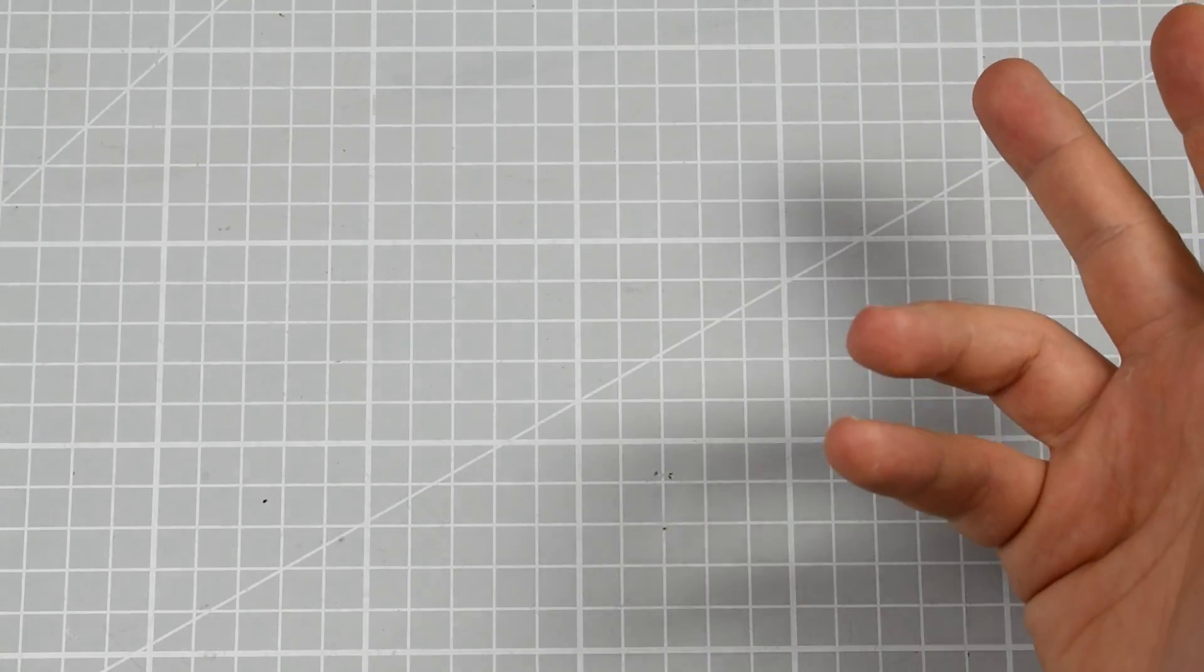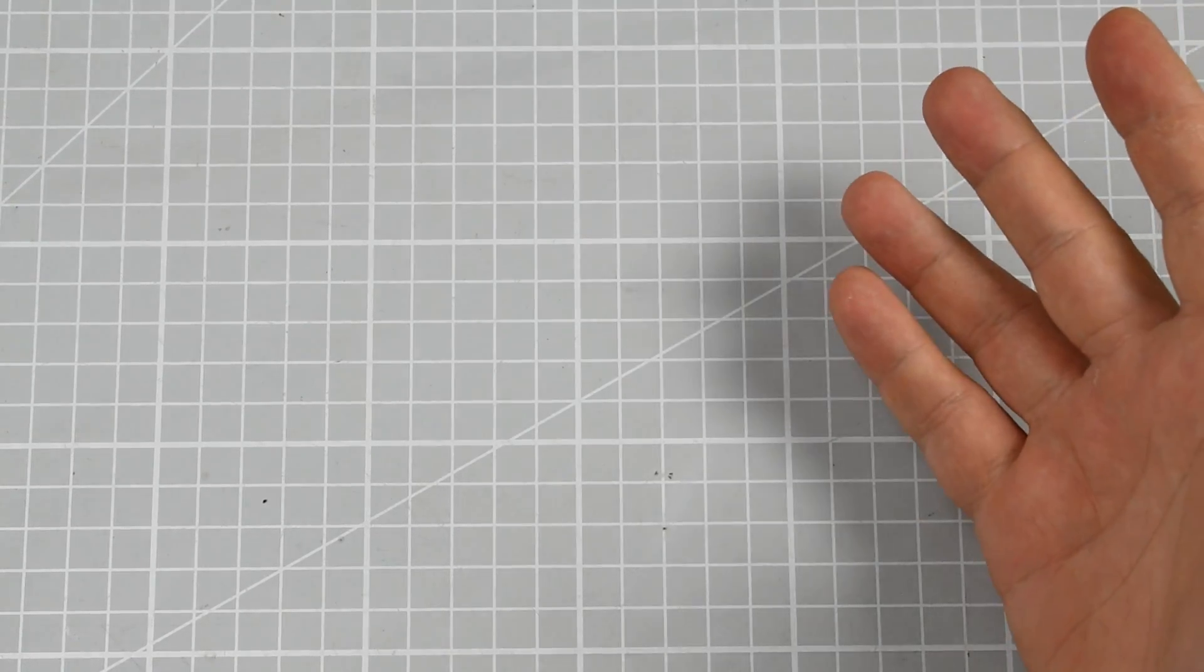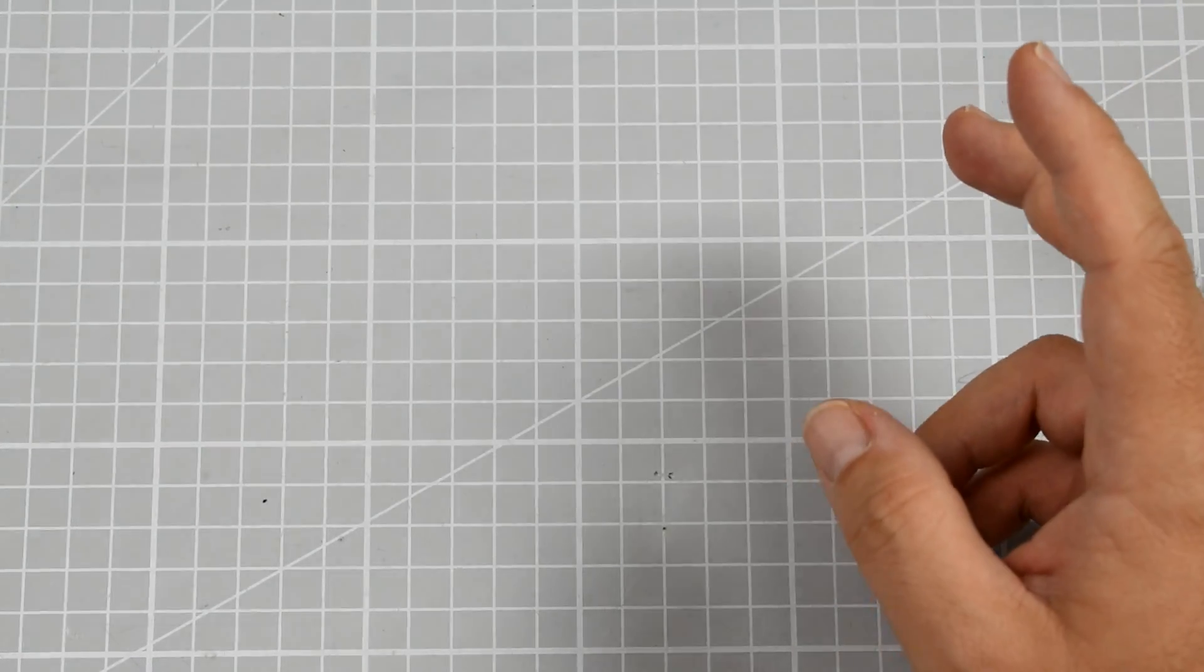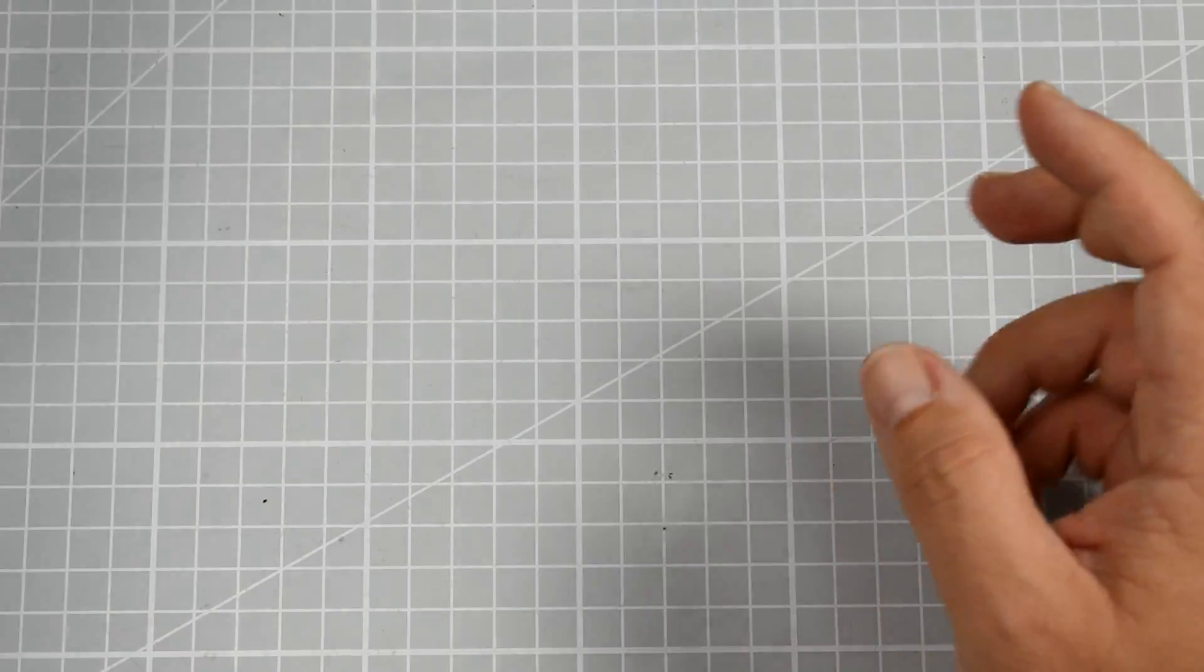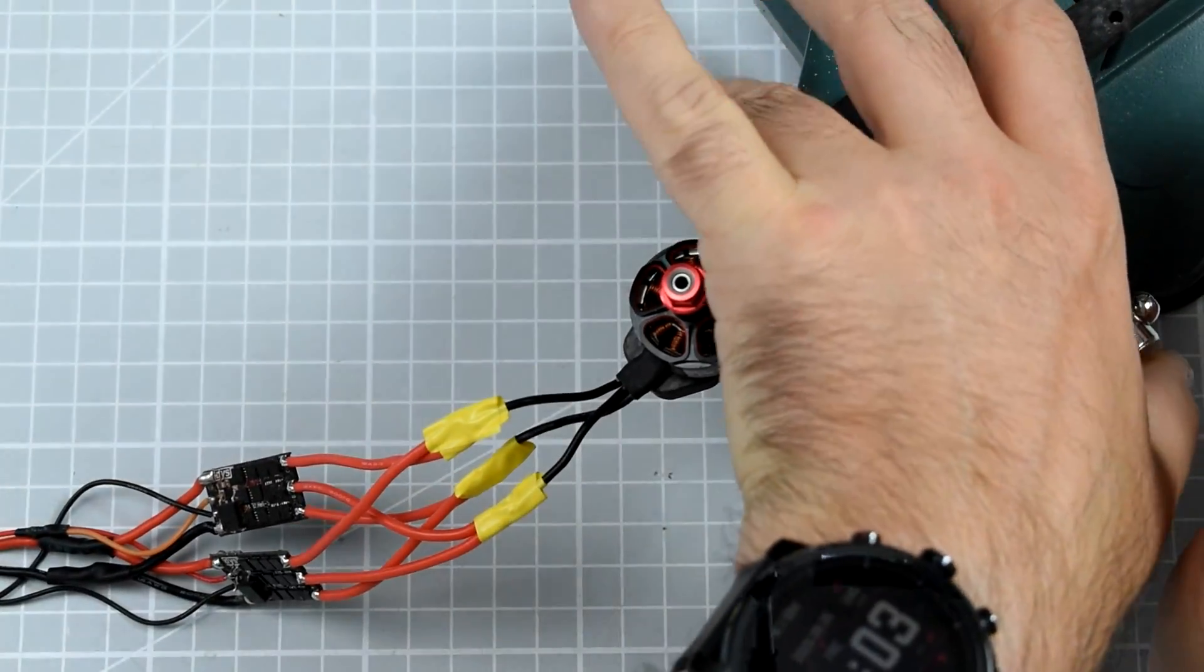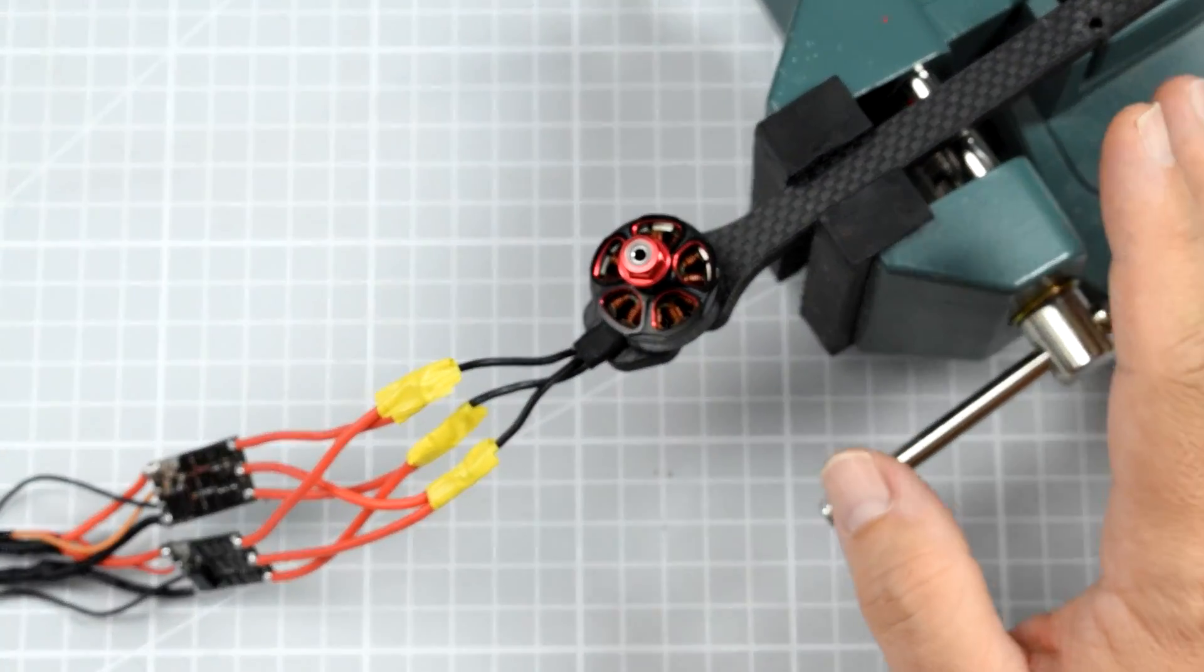Probably the simplest way to tell you what happens when you try to connect two ESCs in parallel to one motor is just to make the experiment. Bear in mind, this is the first time I'm really launching this and I have no idea what might be the result of the experiment.